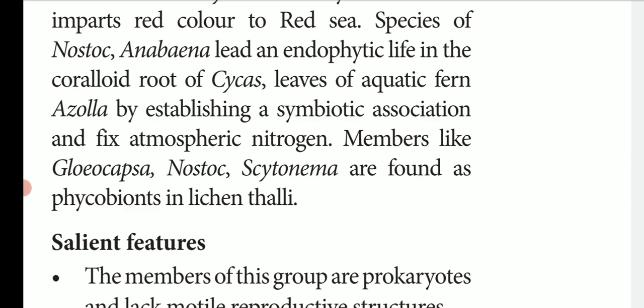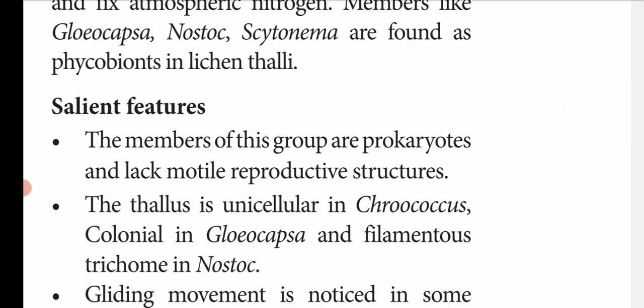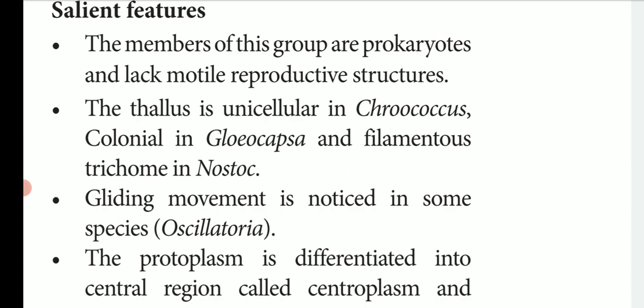The salient features of cyanobacteria: they are prokaryotes — nuclear membrane-bound organelles are absent; the nucleus is primitive. They also lack motile reproductive structures, meaning they cannot move. The thallus can be a single cell like Chroococcus, or colonial like Gloeocapsa, or filamentous.